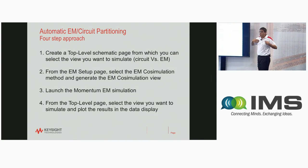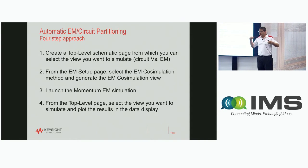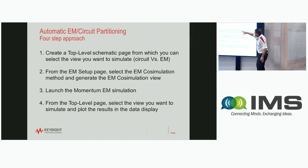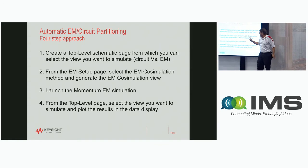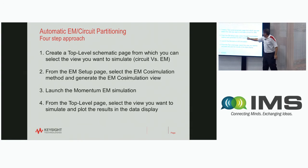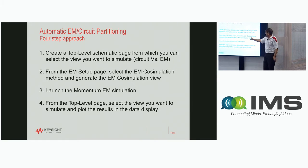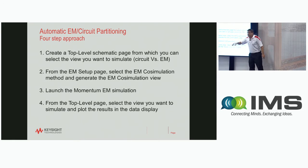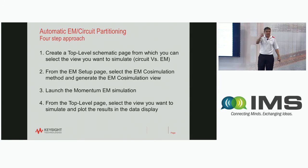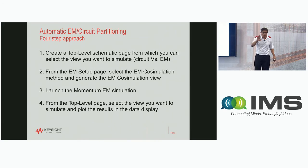To do things automatically requires really just four simple steps. Step one: you create a top-level schematic. Step two: from the EM setup, you select the EM co-simulation method and generate the EM co-simulation view. Step three: you launch Momentum and run the EM simulation. Step four: from the top level you can change views, tune, optimize, and do all kinds of things — I'll show you.